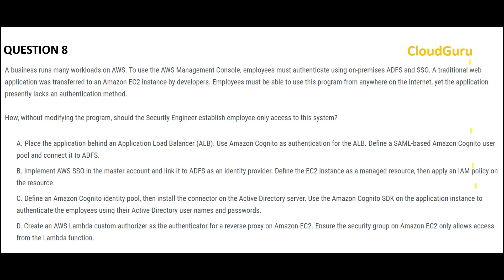Now let us jump into this question. What it is asking is: you have an application, you are moving this application to an EC2 instance, and the employee should be able to log in from anywhere on the internet. Currently, the authentication on-premises is done through ADFS and SSO, but post migration it lacks an authentication method. You are a security engineer and you want to establish employee-only access to the system.